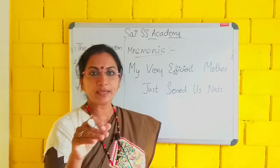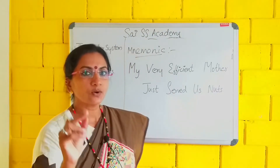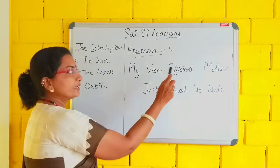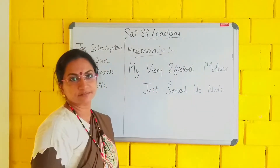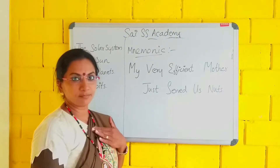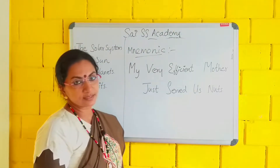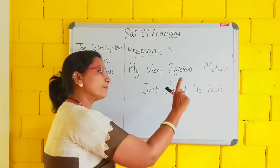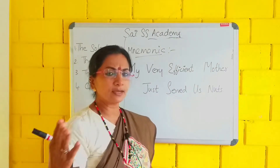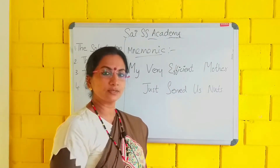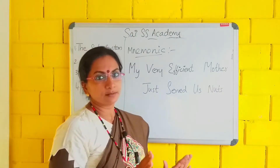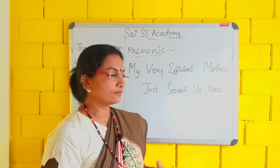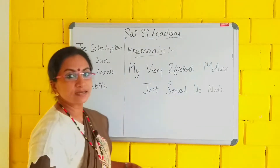I told you eight names are there — eight planets. So how can we remember the eight names very fast? This is the mnemonic: My very efficient mother just served us nuts. We will always remember our mother, right? We are sitting in school, sitting at home, playing — she is always there in our mind. So it is very easy to remember the mother first.